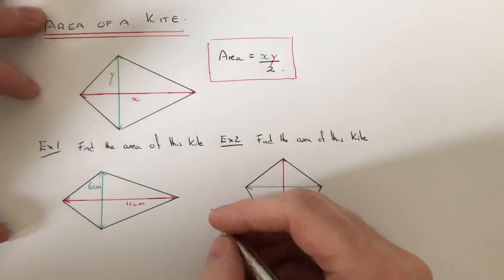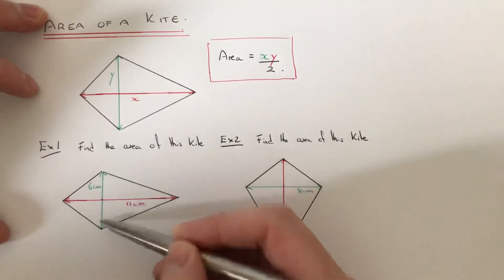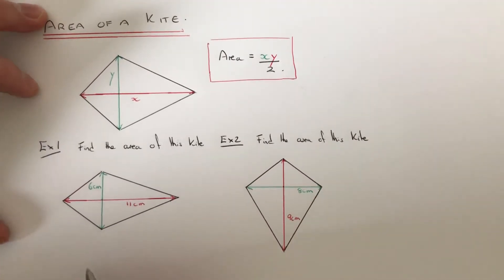Let's have a look at a couple of examples. We've got to find the area of this kite, and the two diagonals on this first kite are 6cm and 11cm.